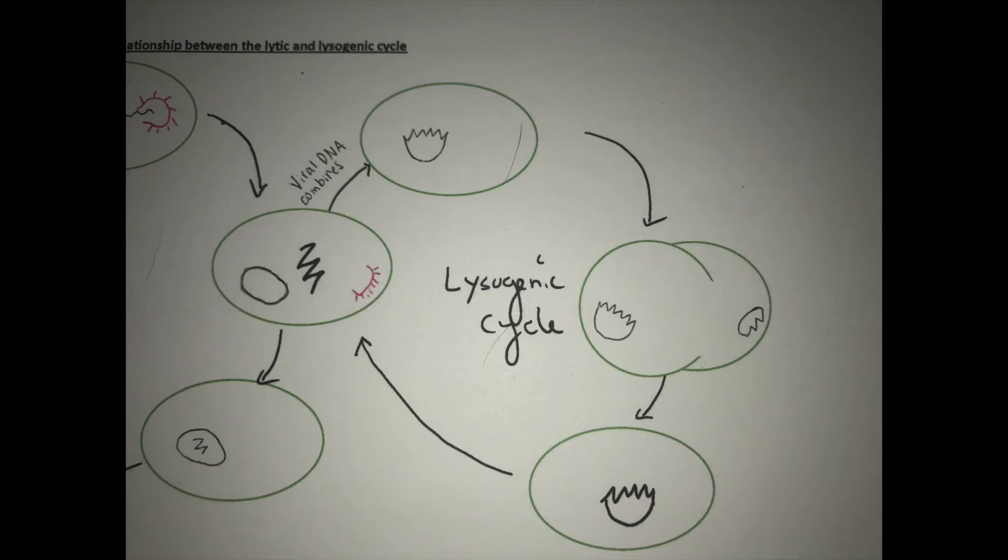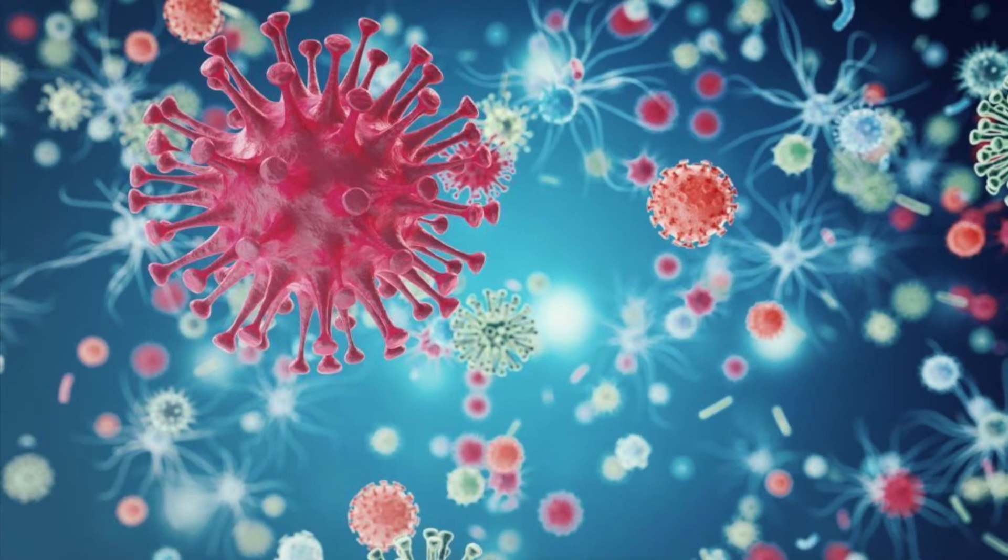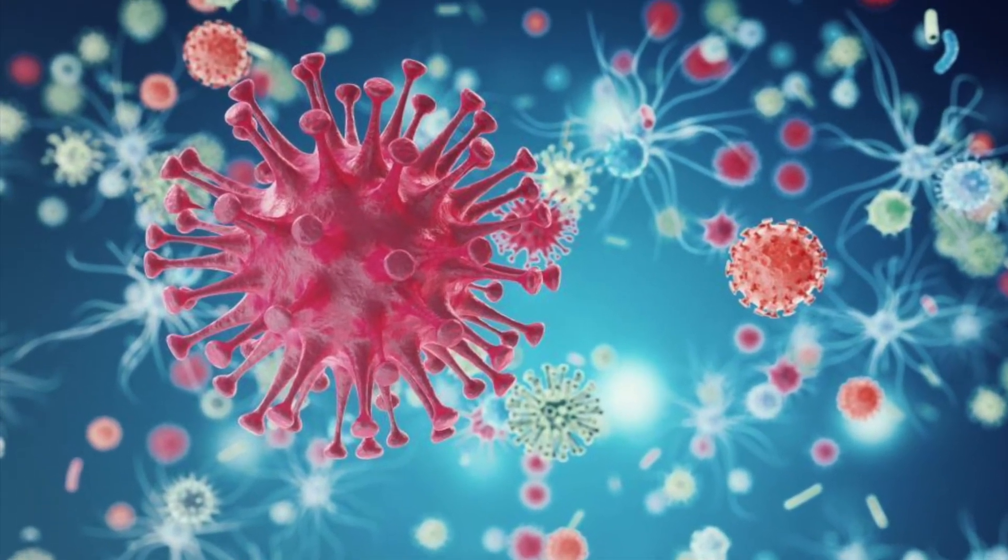What makes the lysogenic cycle different from the lytic cycle is that all viruses can reproduce using the lytic cycle, but only a few can reproduce using the lysogenic cycle. This is because when they are infecting host cells and there's not as many nearby cells that they can infect, they use the lysogenic cycle to create new cells with the virus already embedded in the genome. An example of a lysogenic cycle virus is HIV.